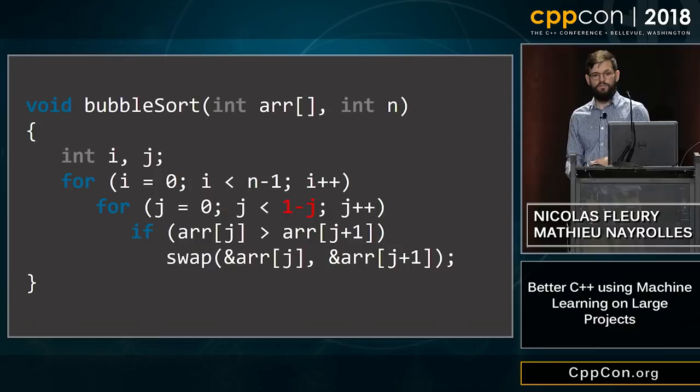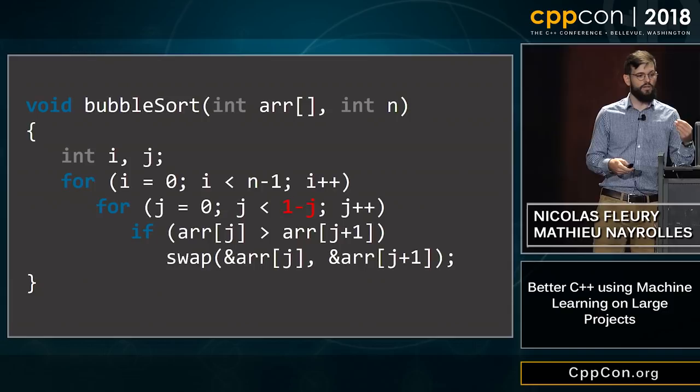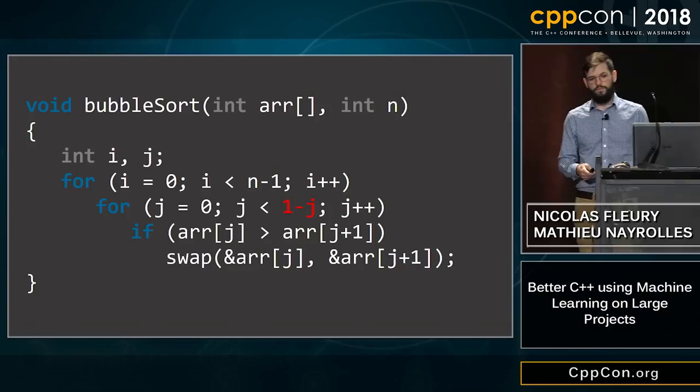Let's have a look at some code. For the sake of argument, let's say that one of your developers introduced a faulty bubble sort. In that bubble sort, the termination condition of your inner for-loop isn't correct — you don't want less than one managed C, you want a proper termination condition.